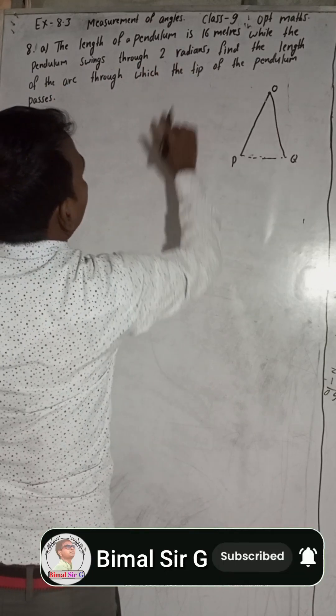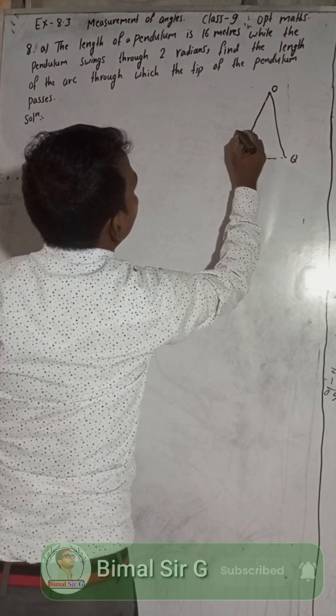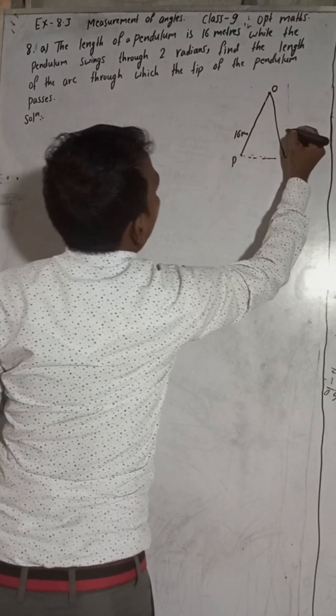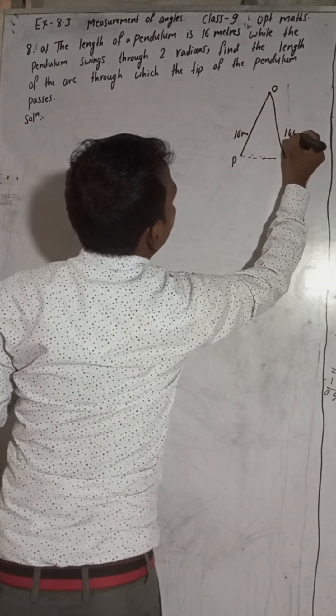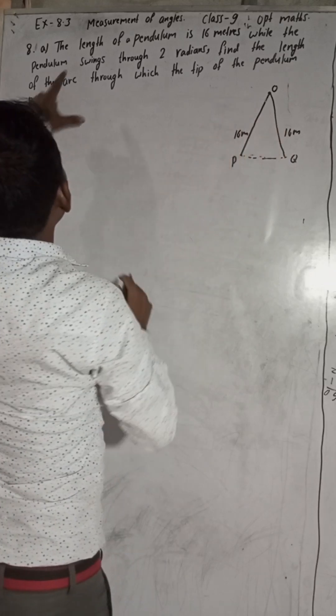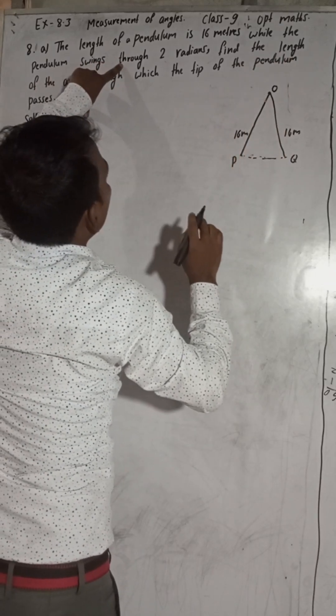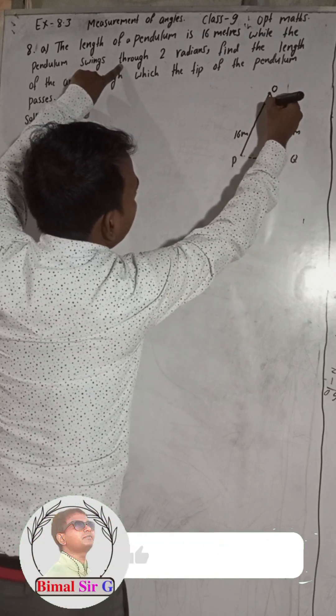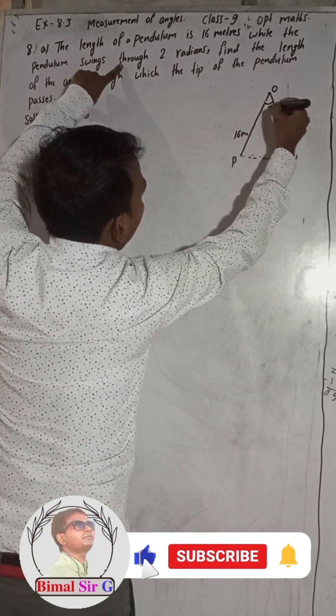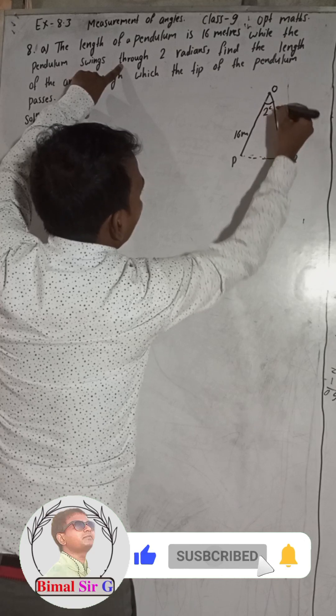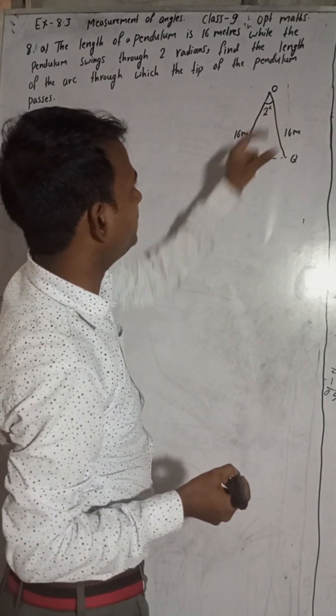The length of the pendulum is 16 meters. So this is 16 meters, means this is our R, 16 meters. While the pendulum swings through two radians, so swings two radians means the center angle is two radians. In our denomination of radians is C.